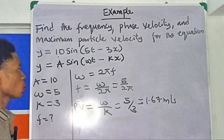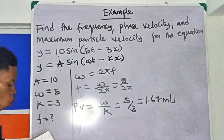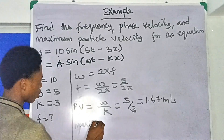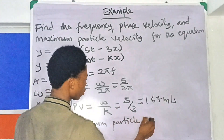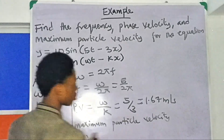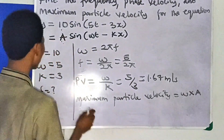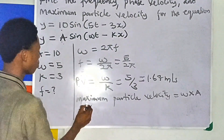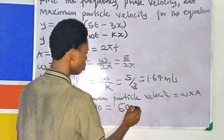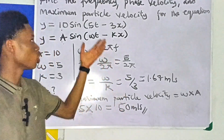The last part is maximum particle velocity. The maximum particle velocity is always angular velocity times amplitude: v_max = ω × A. Angular velocity ω = 5 and amplitude A = 10, so maximum particle velocity = 5 × 10 = 50 meters per second.